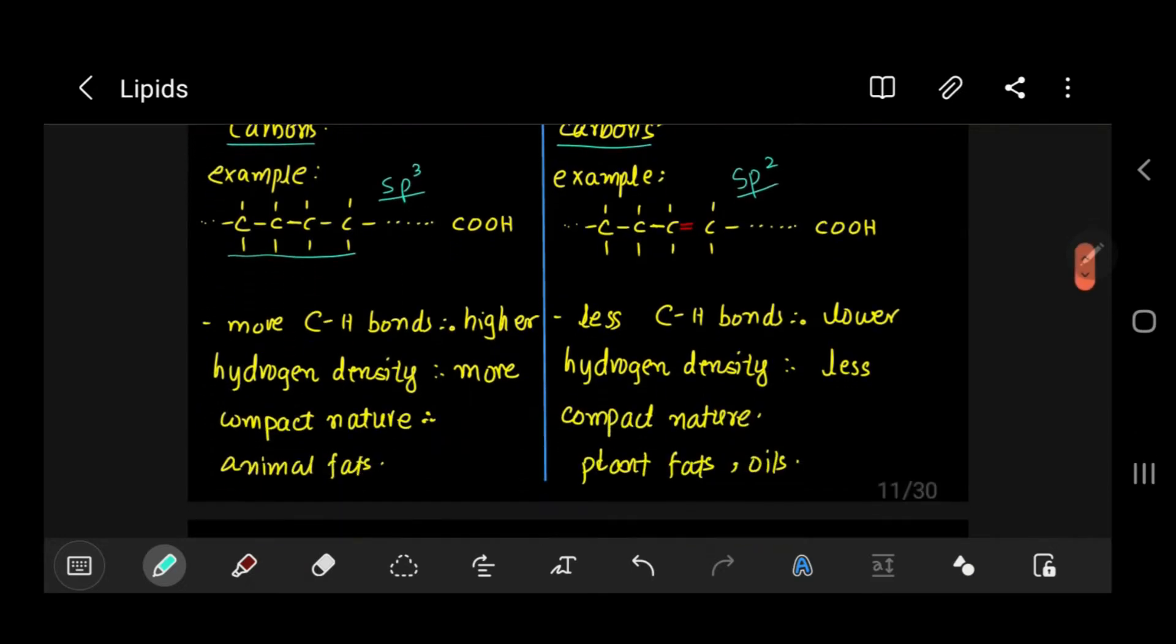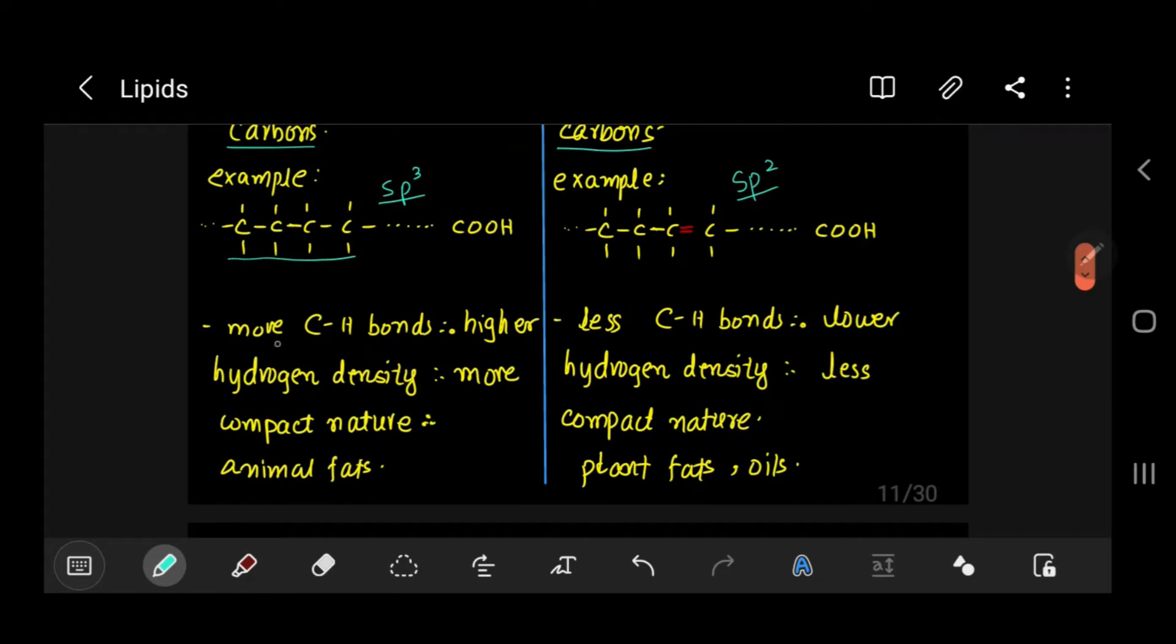Since we have all the carbons that are sp3 hybridized or have all four single bonds, that means more carbon-hydrogen bonds, and more carbon-hydrogen bonds definitely means that we have a higher hydrogen density. Thus we have a more compact nature; they are very close together. An example of this is animal fats.